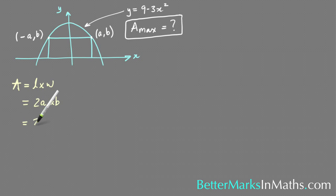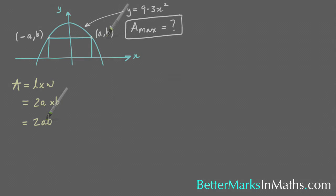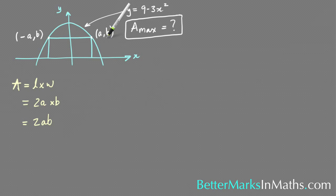Now to find the derivative of this, you need to have one variable. You need to get a in terms of b or b in terms of a. To do that, you need to substitute x equals a into this equation.